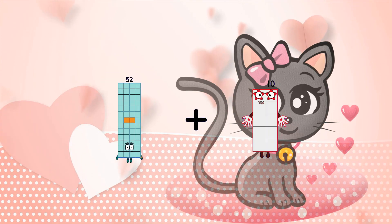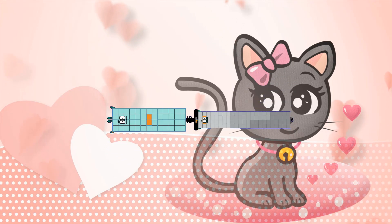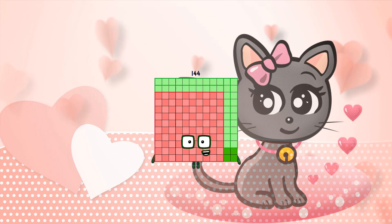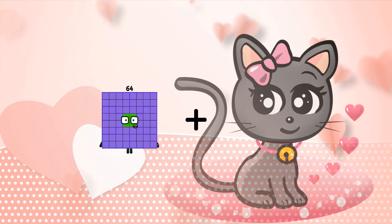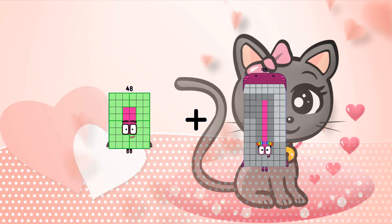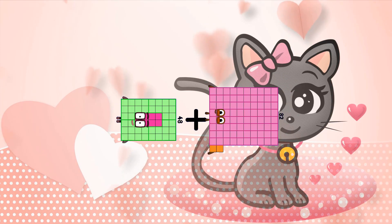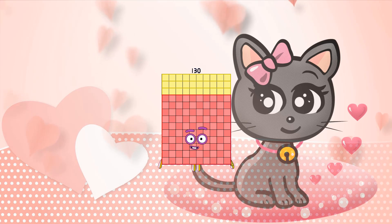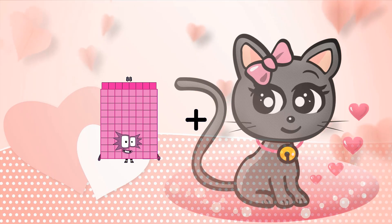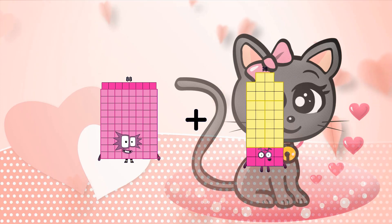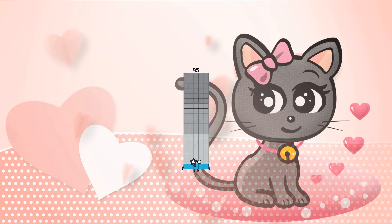52 plus 92 equals 144. 88 plus 7 equals 95.